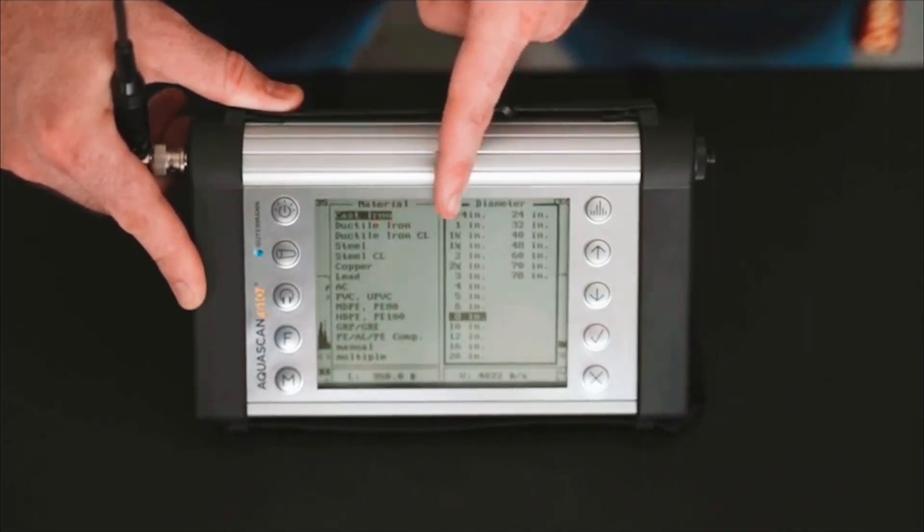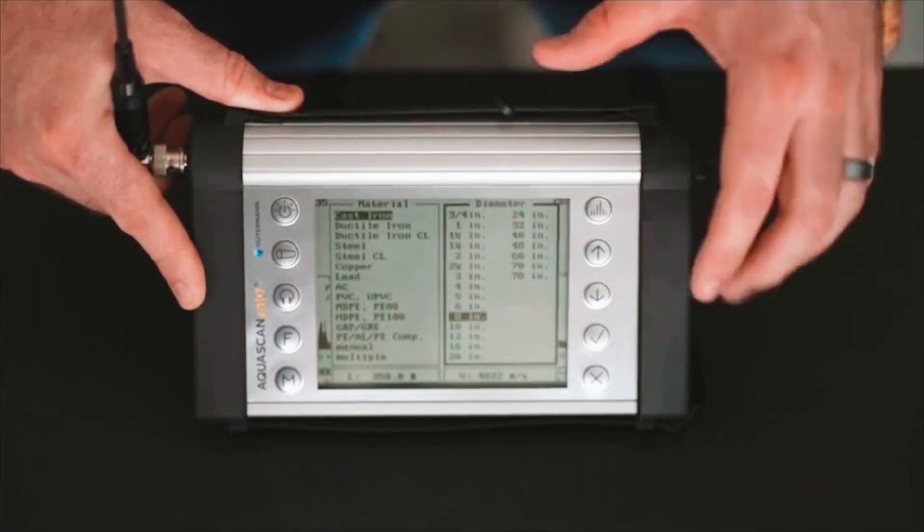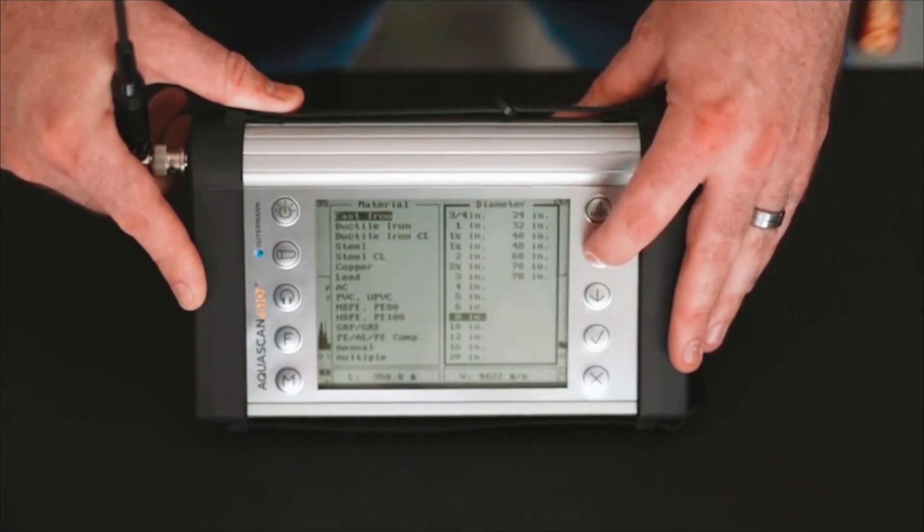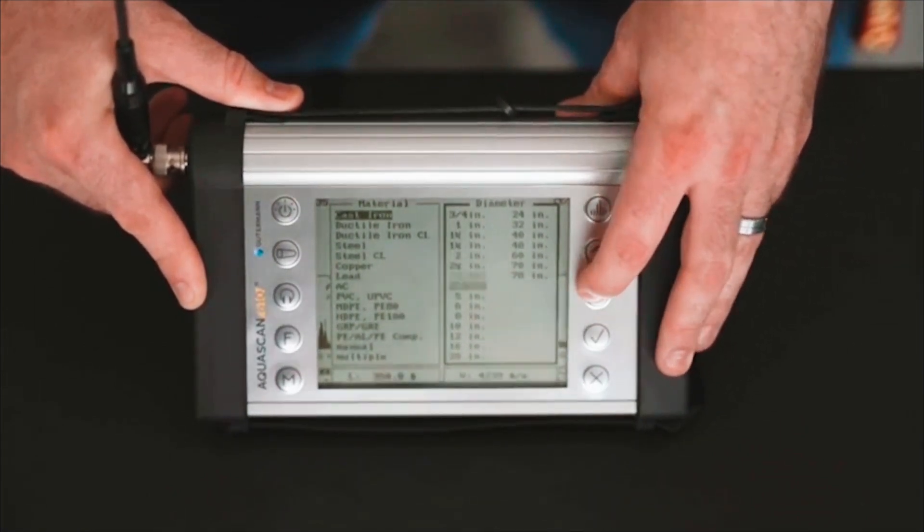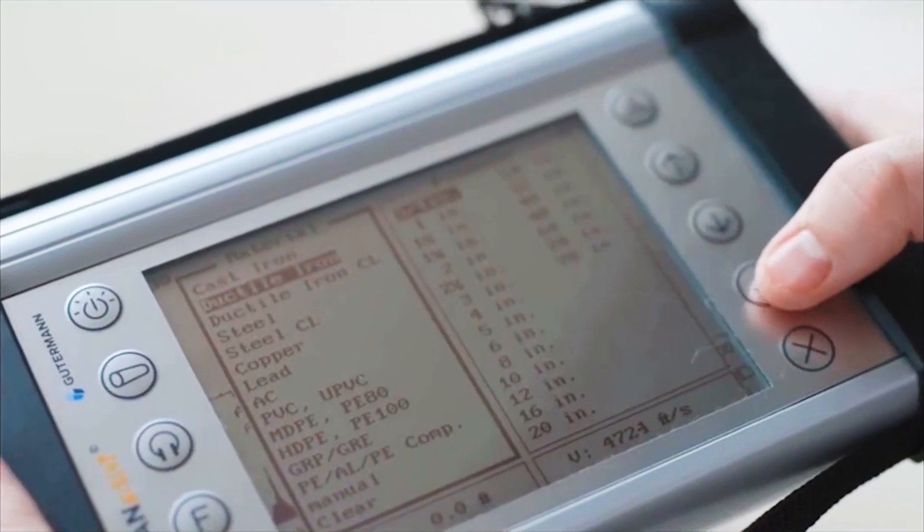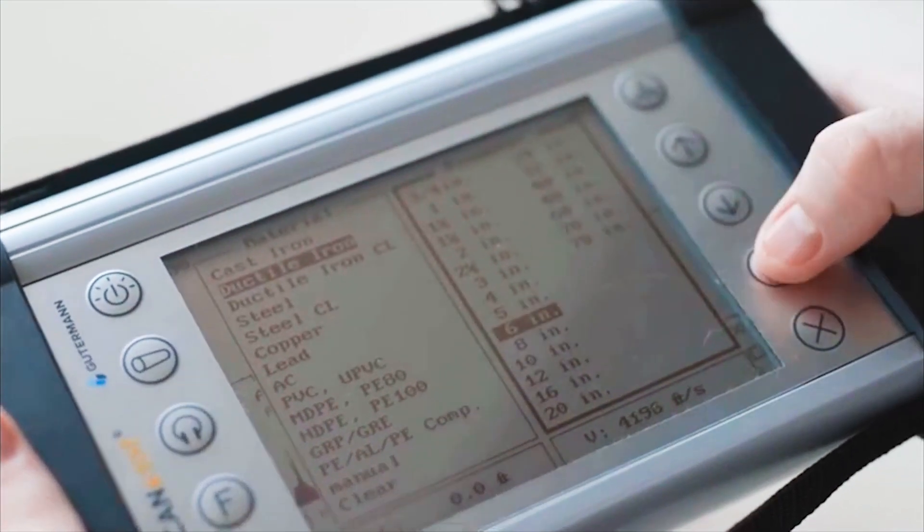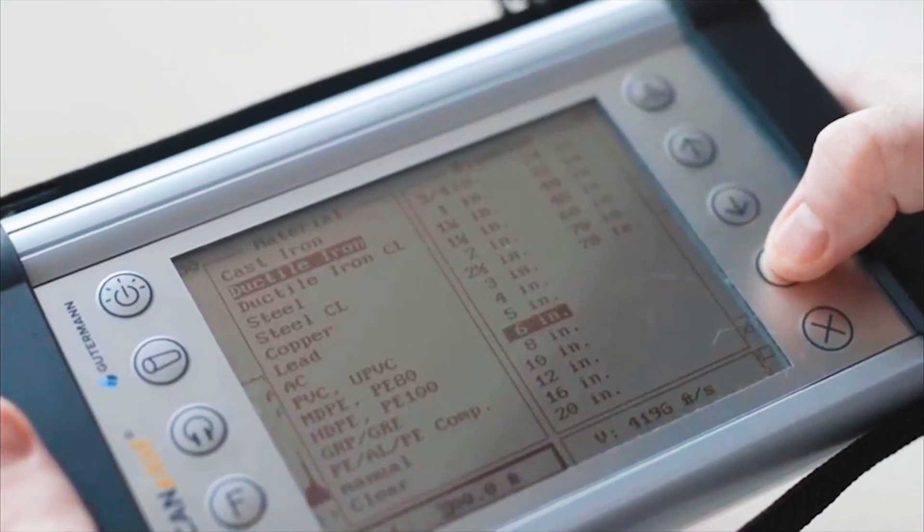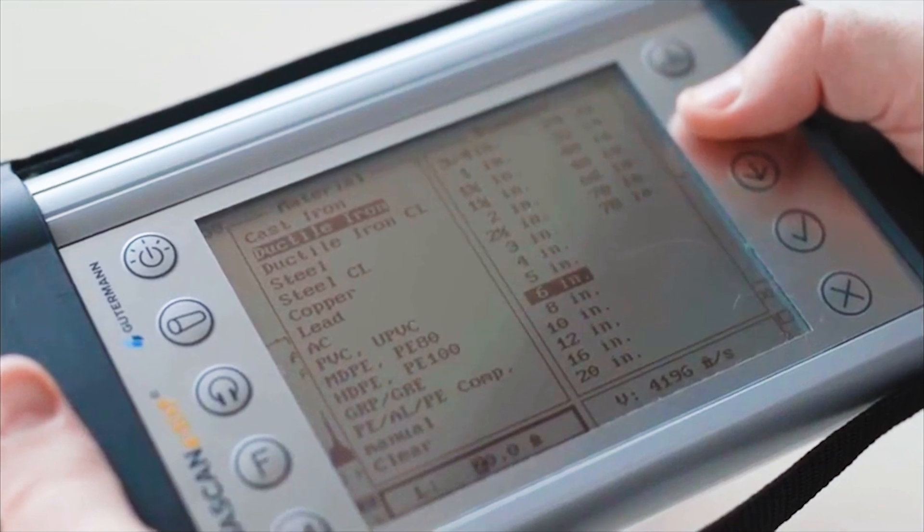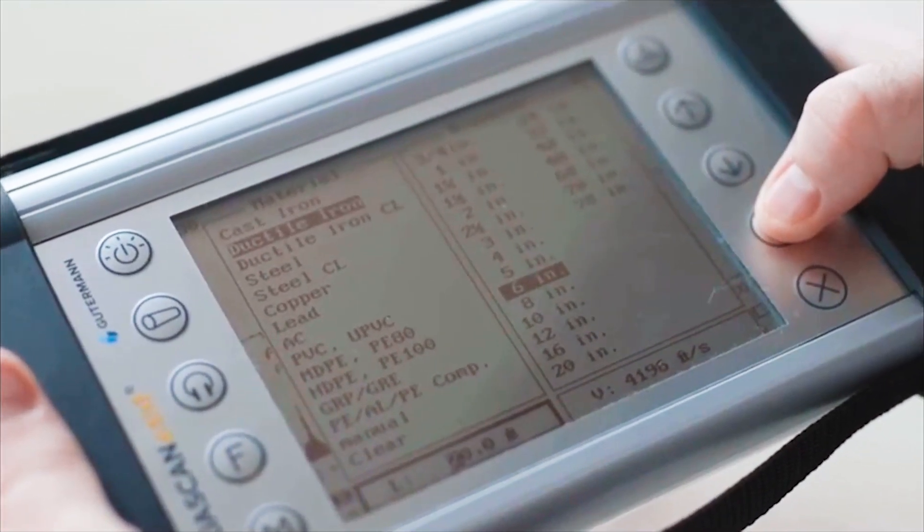Once again, scroll using the up and down buttons to select the pipe diameter. Press the selection and advance the bold border to the pipe length box. Set the pipe length box by using the up and down buttons to select the number and the check button to advance from thousands to hundreds to tenths to ones.